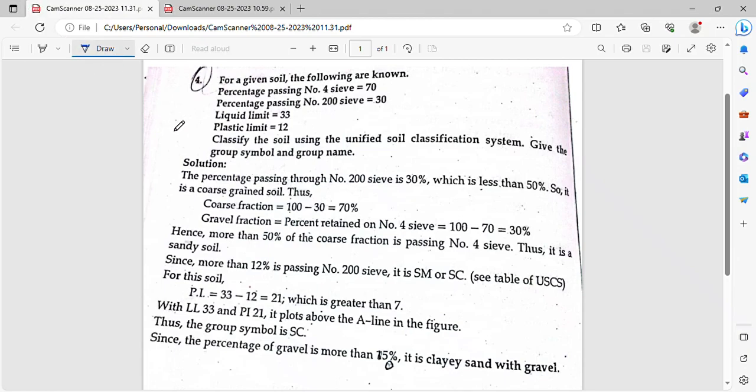What is called USCS? What is it called for one soil? For a given soil, the following are known.